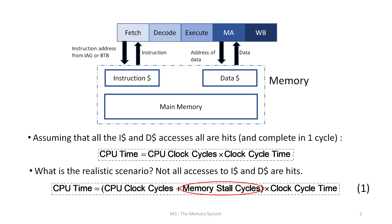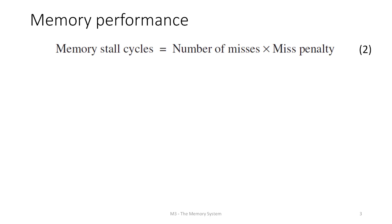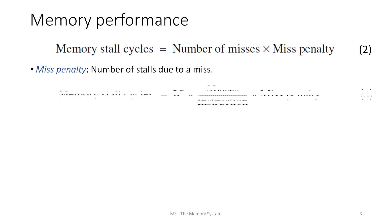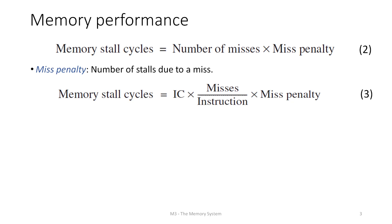Memory stall cycles are given by the total number of misses incurred times the miss penalty. Miss penalty is the number of stall cycles at the pipeline caused by missing at some level of memory. We can rewrite memory stall cycles considering the total number of instructions as: total instruction count times misses per total instructions times miss penalty.